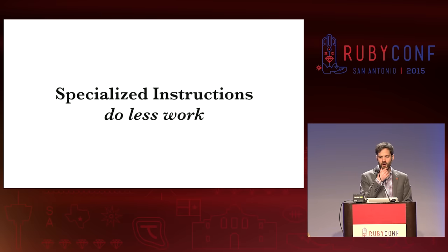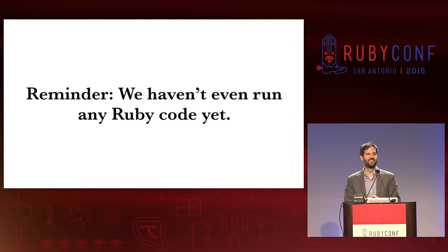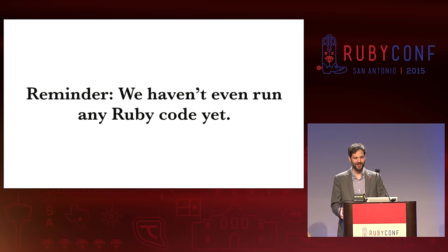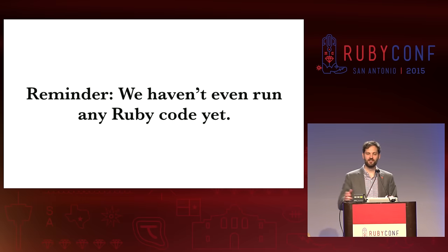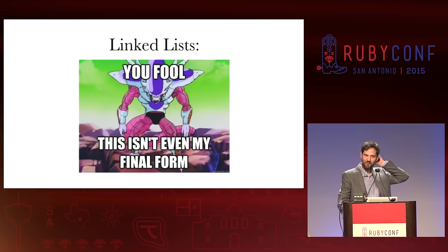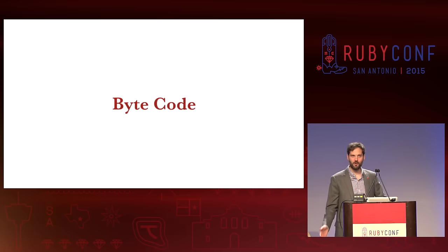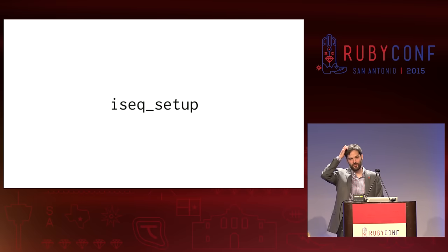As a reminder, we haven't actually run any Ruby code yet — this is all in the 'stuff that happens before your code runs' phase. All right, we're going to continue on from linked lists. We have a bit more work to go. Bytecode. We're inside iseq_setup, and the next thing that actually converts our linked list into actual bytecode is this function called iseq_set_sequence.